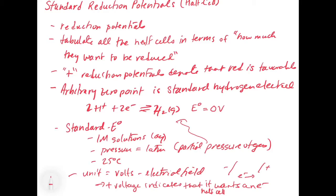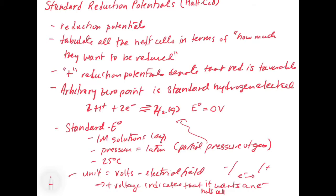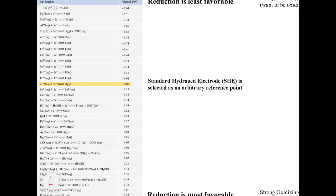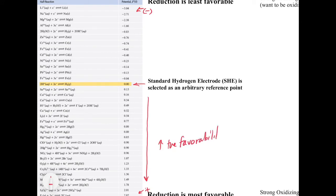Next we're going to look at a chart showing all of the half cell potentials from the textbook. At the very top we have things that are negative, and at the very bottom we have things that are positive. The zero point is our standard hydrogen electrode: 2H⁺ + 2e⁻ → H₂. As we go down toward positive numbers, we increase the favorability of reduction. When you hook up these cells, the ones at the bottom with more positive potentials are going to want to draw electrons toward them—these are going to tend to favor being the cathode. So the one that has the higher potential is going to want to be the cathode.